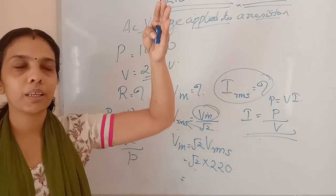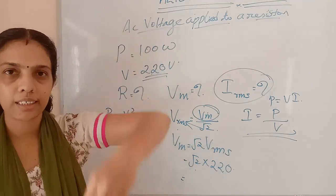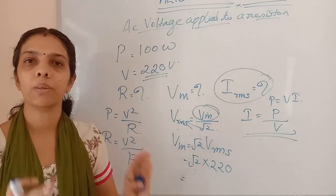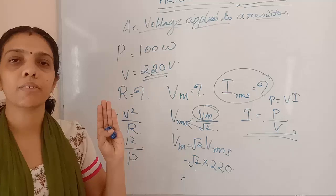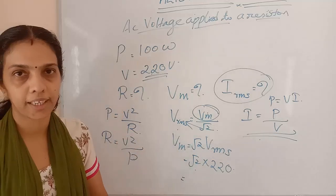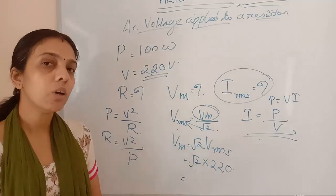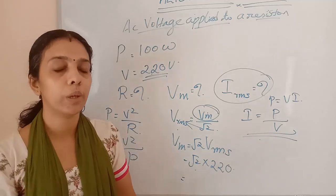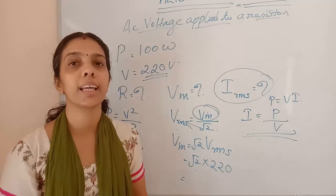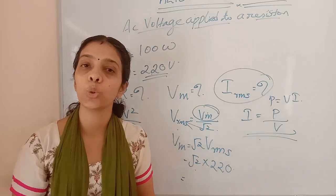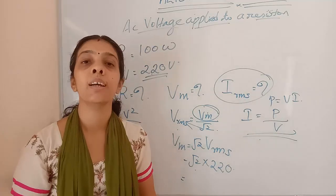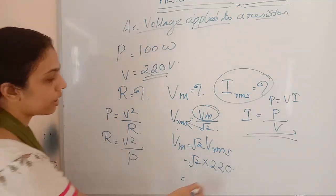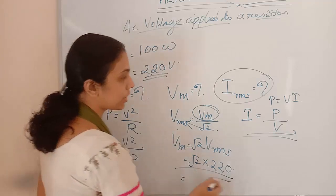The current peaks and then decreases, so only the mean value we get as the final result. In our household circuit, whatever we get as 220 V — that is the RMS value. So there is no confusion.